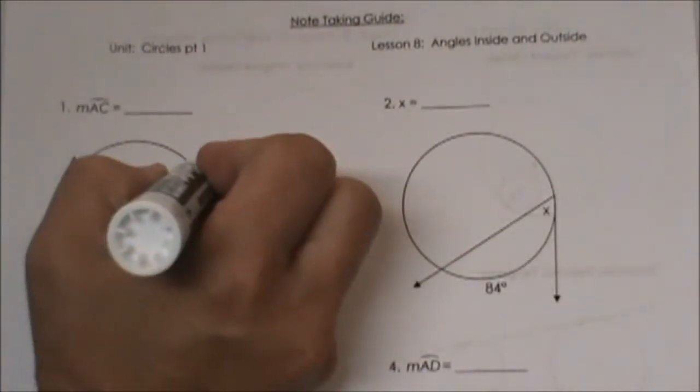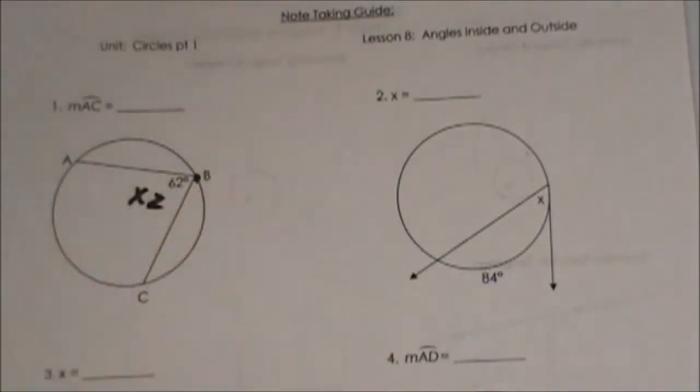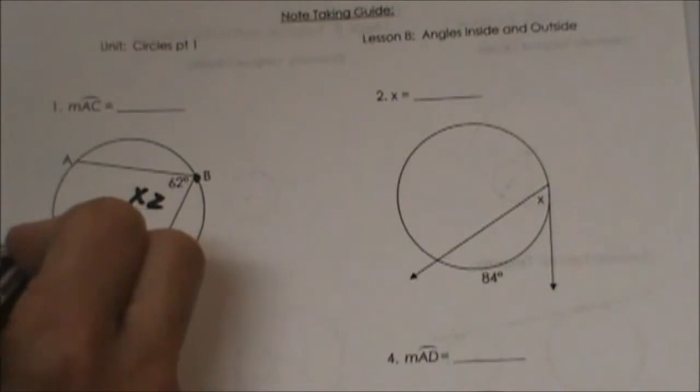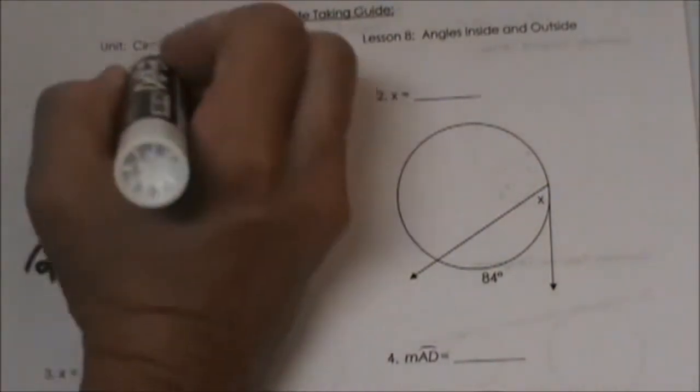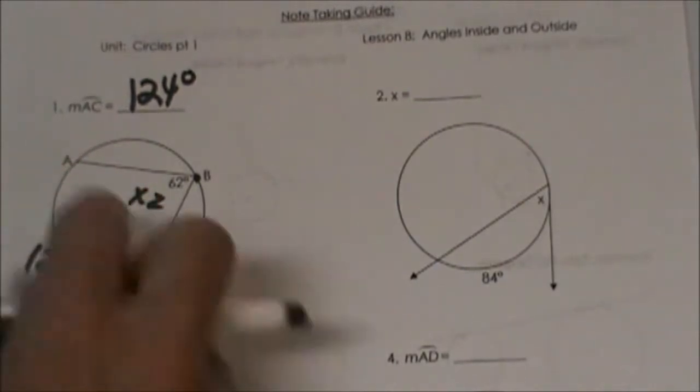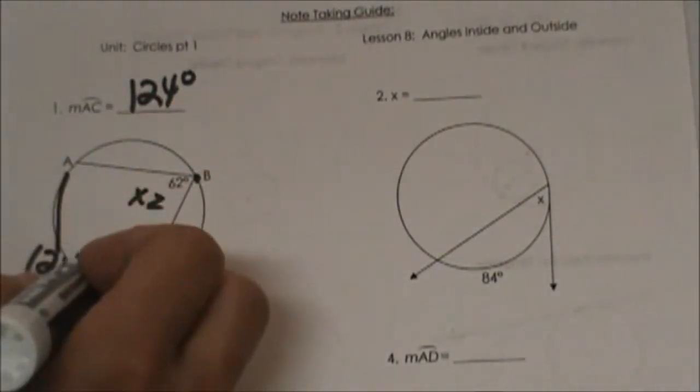All we need to do is take that and double it, times 2, to get the arc. 62 times 2 is 124. That is the arc measure from A to C. That is an inscribed angle.